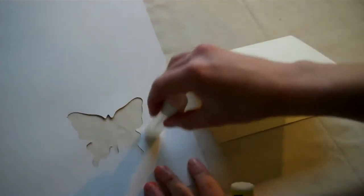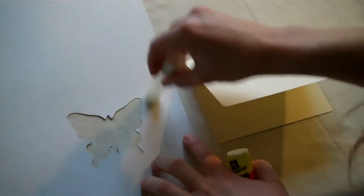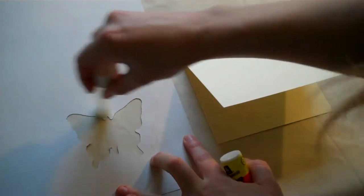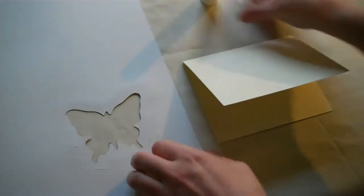So now what you're going to do is just put a little bit of glue on the back of the butterfly cutout. You're going to glue that to the front of the card, centering where the butterfly was cut out.